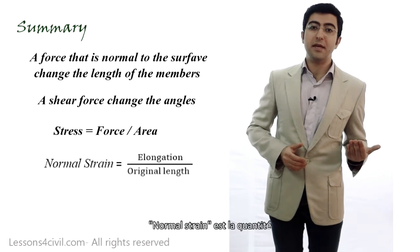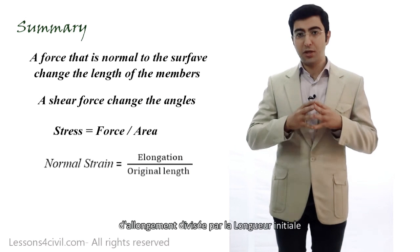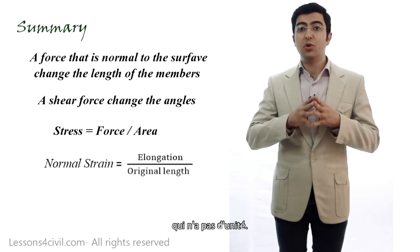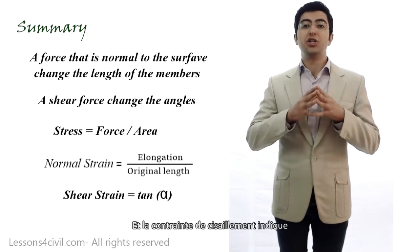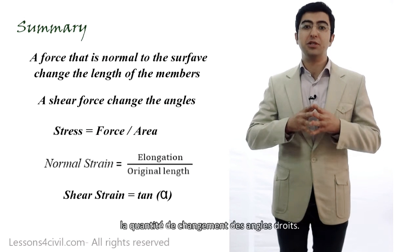Normal strain is the amount of elongation divided by the original length of the member and it has no units. Shear strain indicates the amount of change in vertical angles.